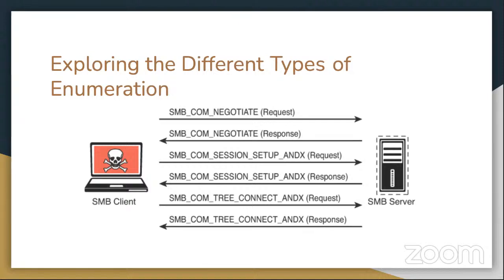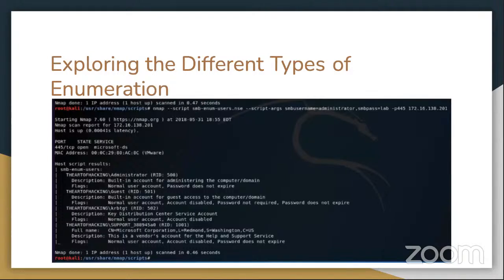We could also do users. Gathering a valid list of users is the first step in cracking credentials. Windows networks can normally be manipulated with Server Message Block, which is normally port 445. Here are two examples: SMB Comm Negotiate, where the client tells the server what protocols, flags, and options it would like to use; and SMB Comm Session Setup NX, which is used for authentication. Nmap has a script called smb-enum-users that can be run to bring out the number of users in a system — you can absolutely use Nmap to not only scan ports, but bring out the list of users in a Windows system.